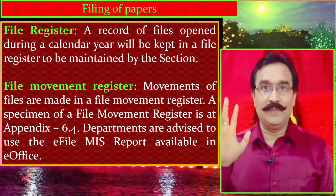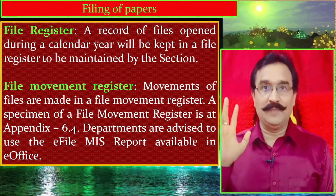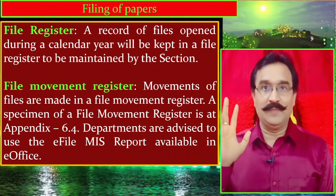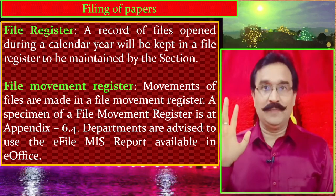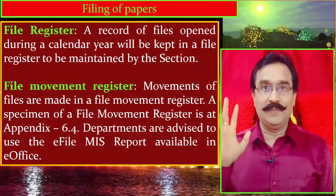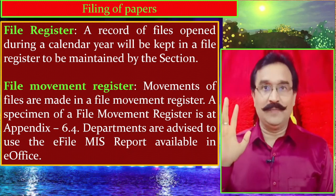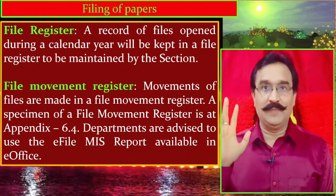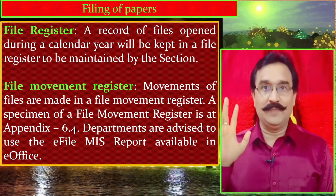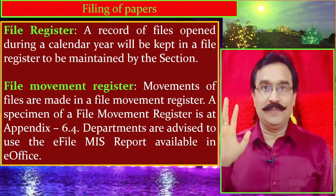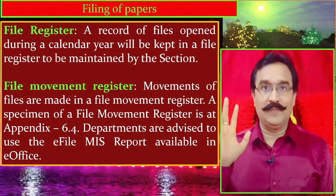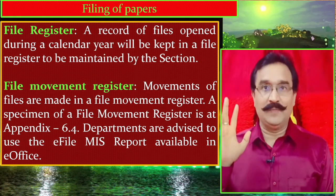So what is a file movement register? Movements of files are recorded in a file movement register. Files need to be sent from one section to another section for disposal. When a file is sent from one section to another, the register in which this is recorded is called the file movement register. It records the serial number, file reference number, file subject, and to which officer or section the file is being sent.